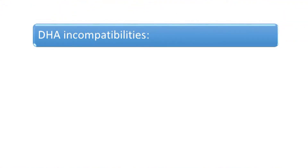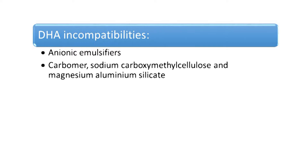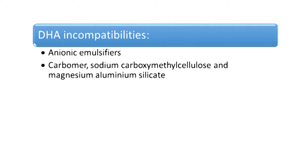The problem is what DHA doesn't like. The first incompatibility to avoid is anionic emulsifiers — you need to create your formulations using non-ionic emulsifiers only. It's also not compatible with a lot of charged thickeners such as carbomer, sodium carboxymethyl cellulose, and magnesium aluminum silicate, as they can all lead to degradation of DHA. You're better off using hydroxyethyl cellulose, methyl cellulose, and silica instead.